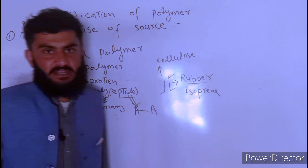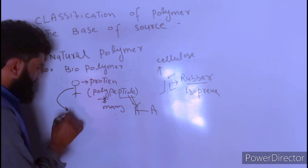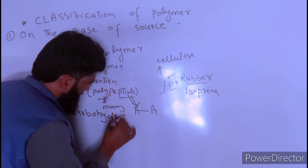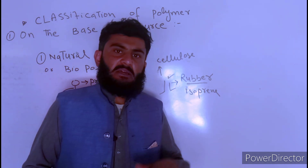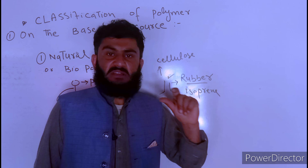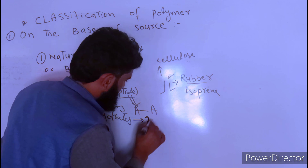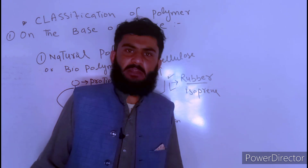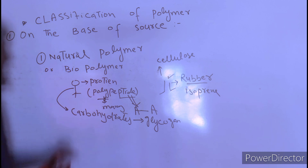The second component found in animals is carbohydrates. In human beings, carbohydrates are stored in the form of glycogen. Glycogen is a polymer of glucose.